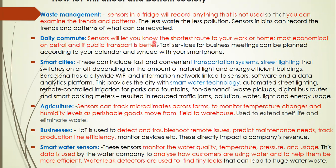Your daily commute: sensors will let you know the shortest route to work or home, most economical on petrol, and public transport is better. You can note that taxi services for business meetings can be planned according to your calendar — you can sync your transport with your business meetings using your smartphone. Smart cities imply a convenient transportation system, and street lighting that switches on and off dependent on the amount of natural light using sensors.